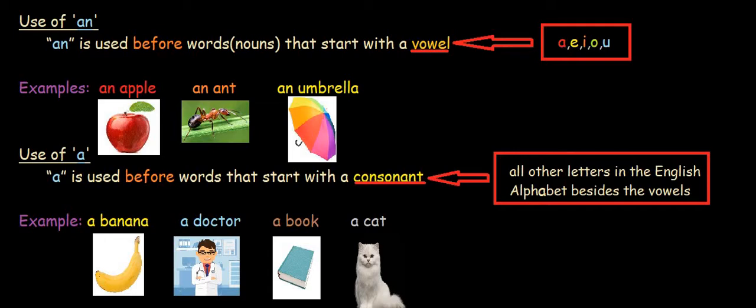So, if a word starts with a vowel, for an example, apple. The word apple starts with a, which is a vowel. We use an before it to show that there is only one apple. And it starts with a vowel a. So, we use an before that.